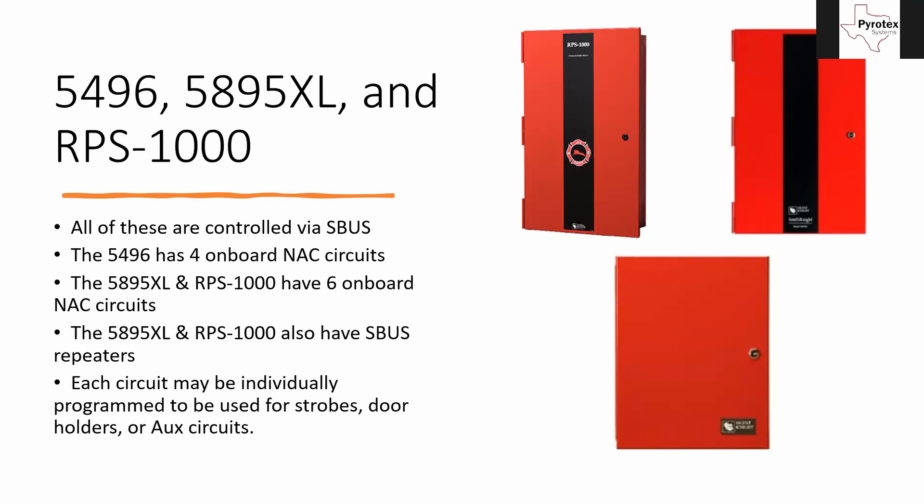My advice for when installing these larger panels: anytime you have SBUS coming in and out, utilize that repeater so you never have to worry about it. The stronger the signal is, the faster everything communicates and the better it'll be for the system. Even if you've only got six of these panels and you do it at five of them — because one has to be the end — it might be overkill, but it's not going to hurt; it's overall good for the system.